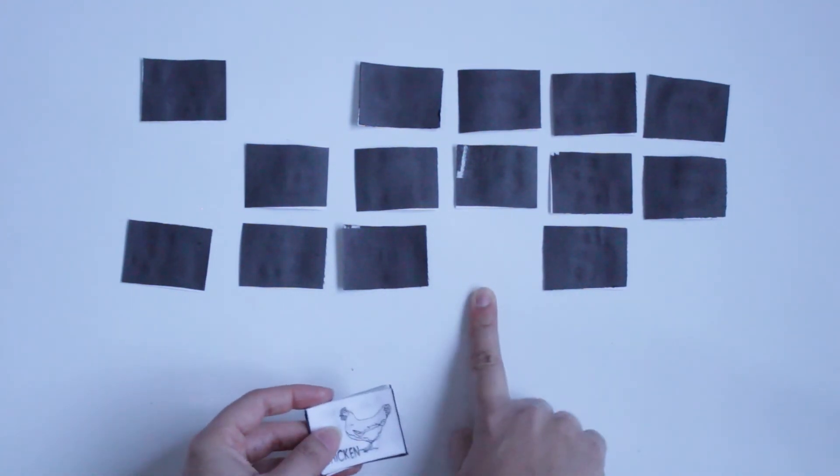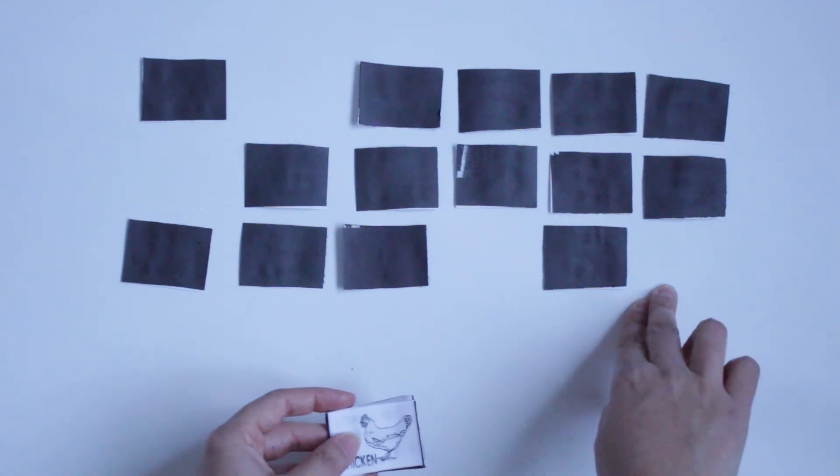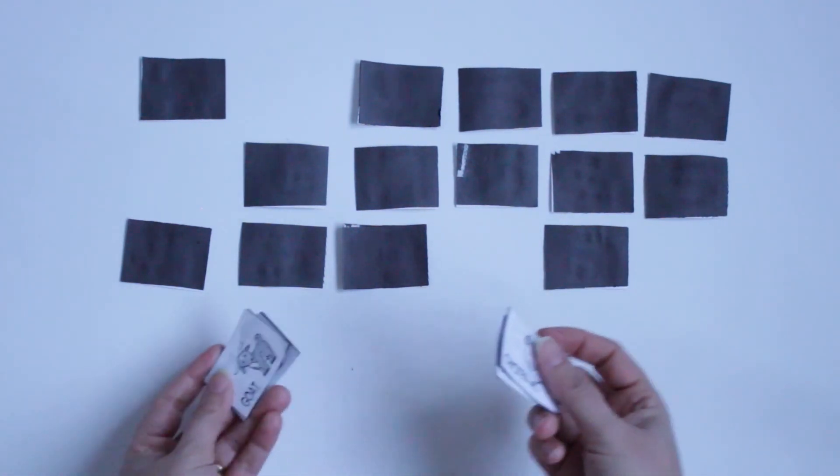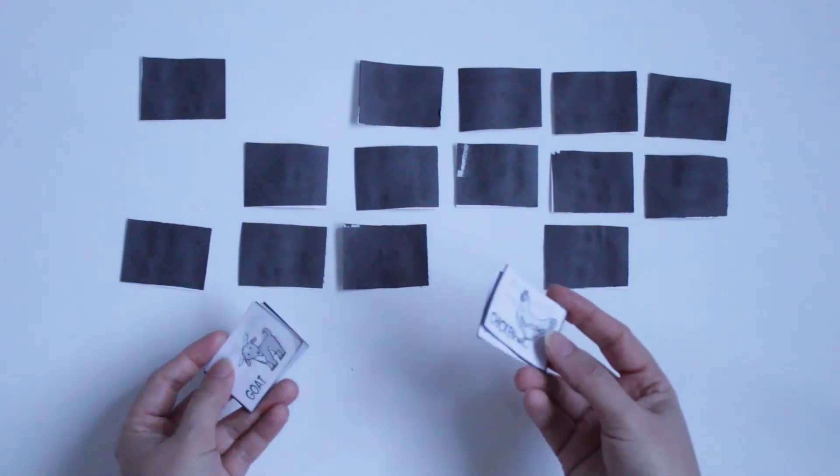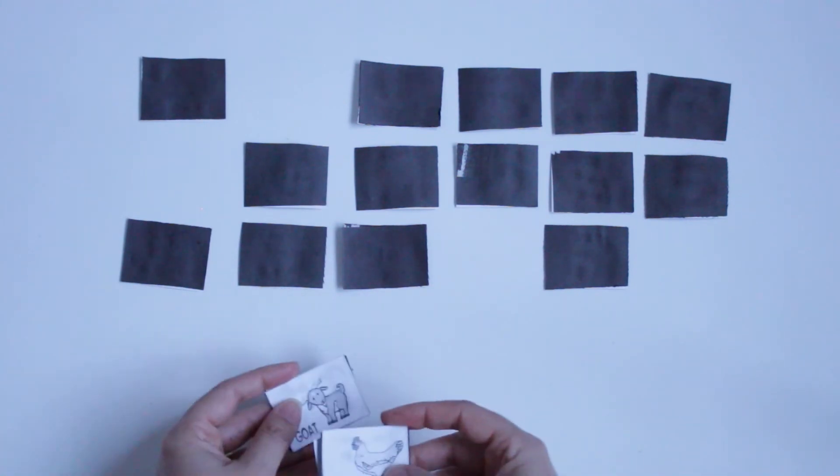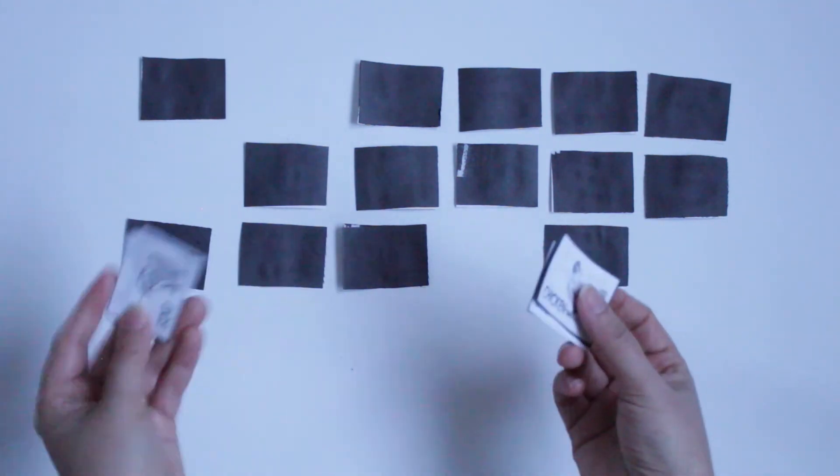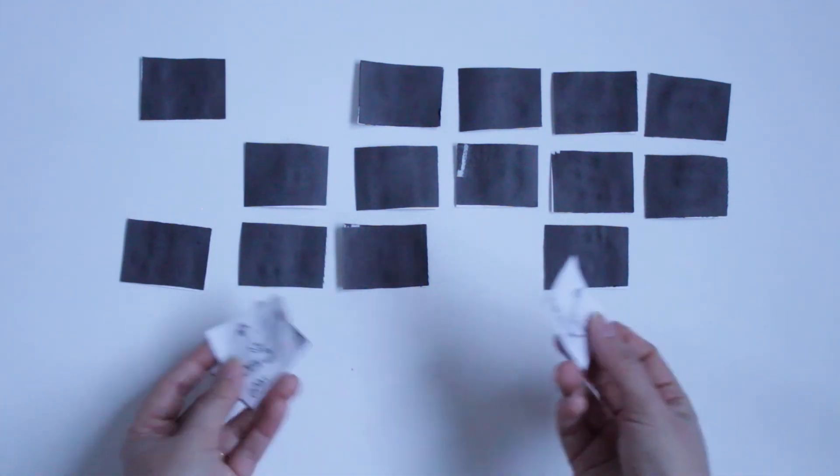They are practicing their organization, their memory, and also their counting to know how many they have. They can count the pairs, for example two pairs, or they can count the cards - one, two, three, four cards.